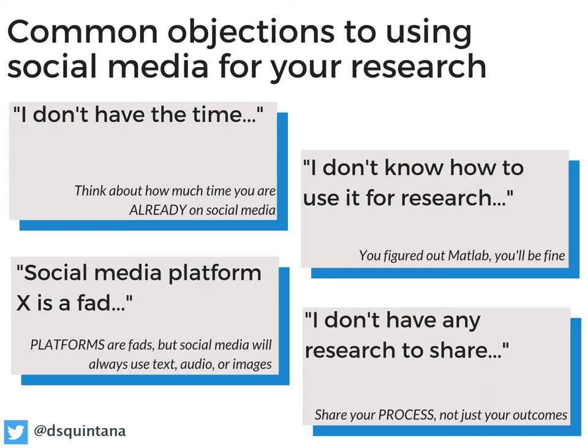I want to quickly address some common objections to social media. The first: I don't have the time. When you say that, what you're really saying is it's not a priority. I think social media is such an important investment of your time, especially as an academic. Right now, to say a journalist isn't on social media is kind of ridiculous. I think in five to ten years every single academic is going to be distributing and sharing their work on social media. It should be an important priority — not only for communicating with researchers, but also with the public.